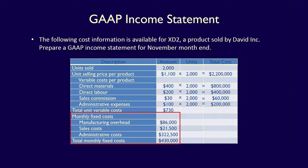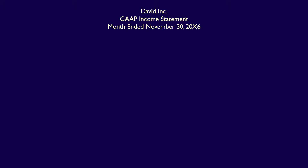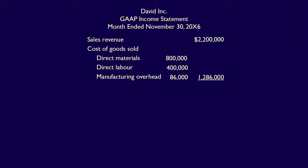The monthly fixed costs are always provided as totals for the period, so no calculation is required. We now have all the necessary information to complete our standard GAAP income statement for David Inc., month ended November 30, 200X6. Sales revenue is $2,200,000. Under cost of goods sold: direct materials $800,000, direct labor $400,000, and manufacturing overhead $86,000, resulting in total cost of goods sold of $1,286,000. Gross profit is $2,200,000 minus $1,286,000, which equals $914,000.